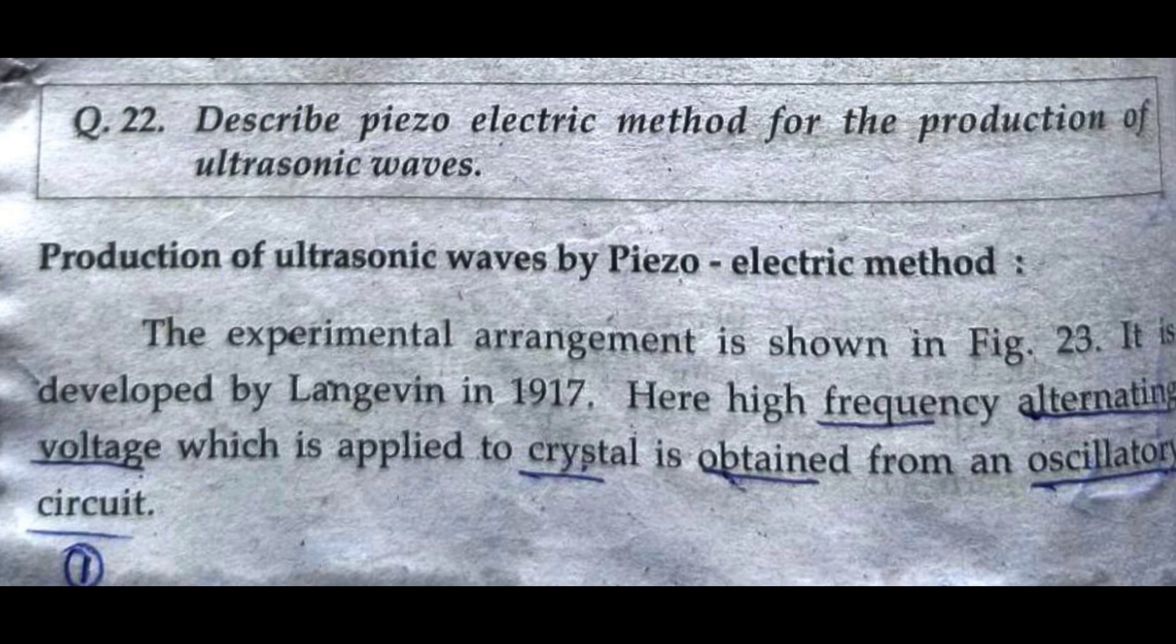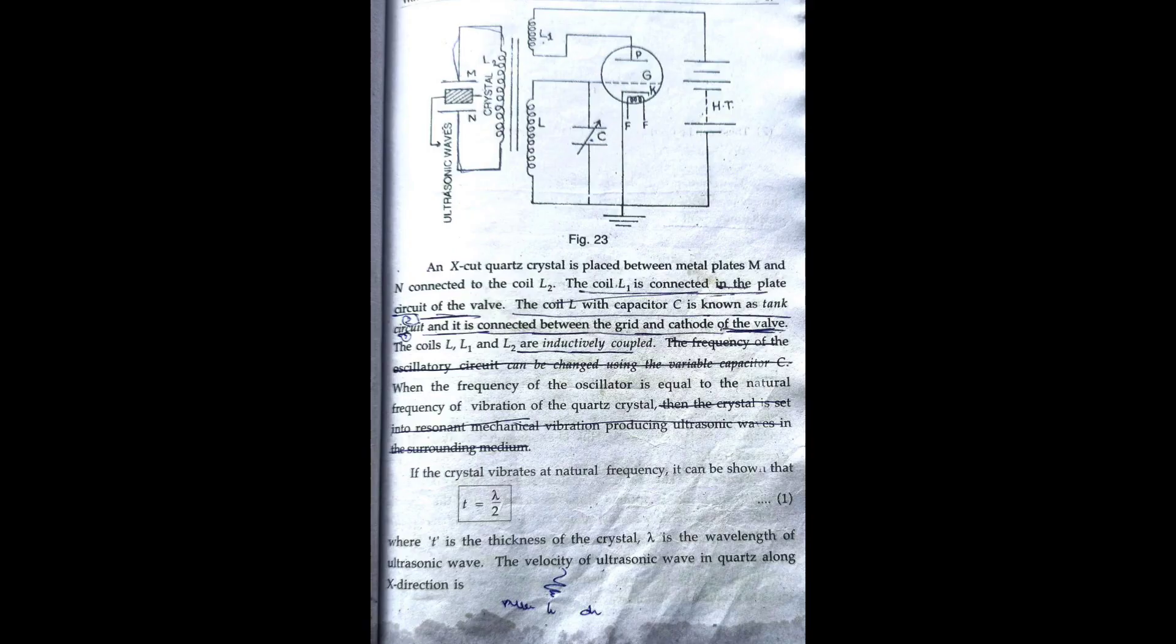Here high-frequency alternating voltage which is applied to crystal is obtained from an oscillator circuit, and X-cut quartz crystal is placed between metal plates M and N connected to the coil L.